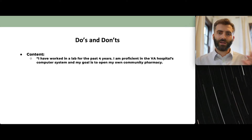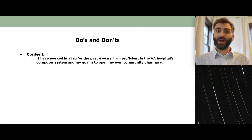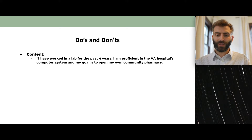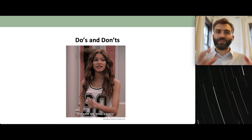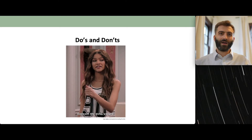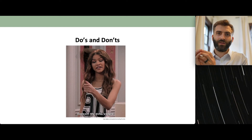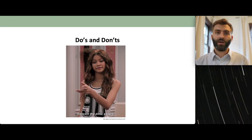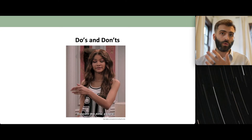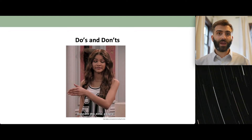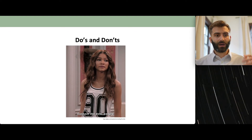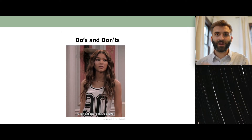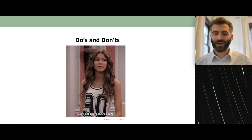Now consider this content section: 'I've worked in the lab for the past four years. I am proficient in the VA hospital's computer system. My goal is to open my own community pharmacy.' What's wrong? There's no narrative or flow — working in a lab, being proficient in the VA computer system, and wanting to open a community pharmacy feels disjointed. Instead, make it a story: 'I've worked in a lab for four years and developed business skills from ordering supplies. Working at the VA I learned multiple computer systems. Using my business skills from the lab and technology skills from the VA, I plan to open my own community pharmacy.'